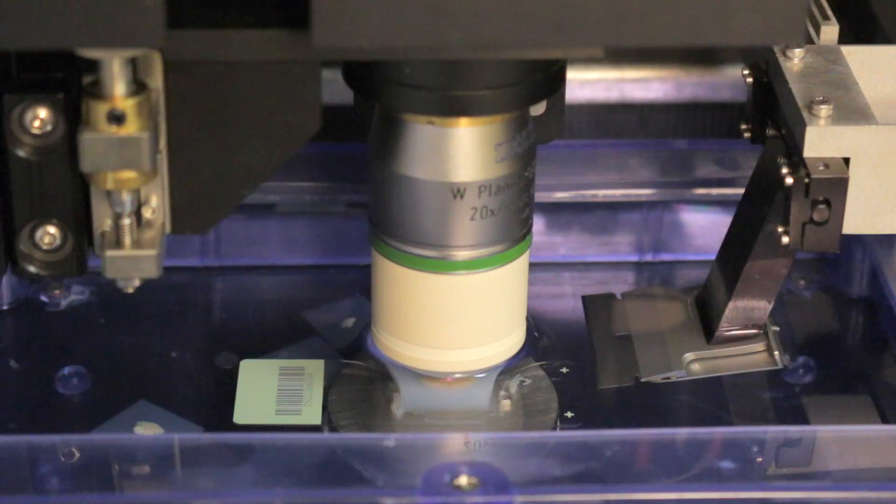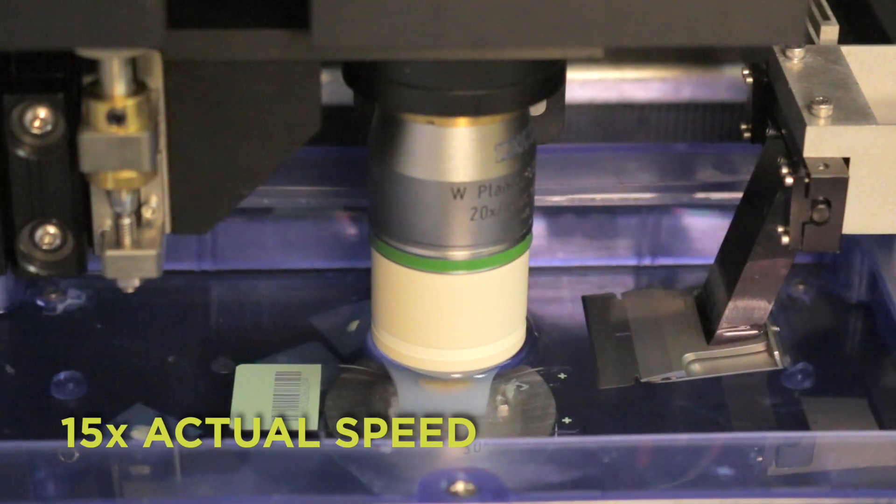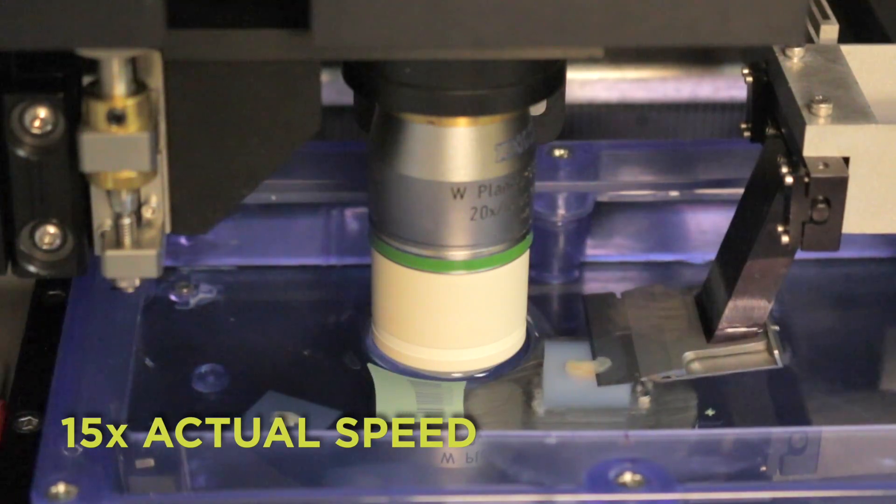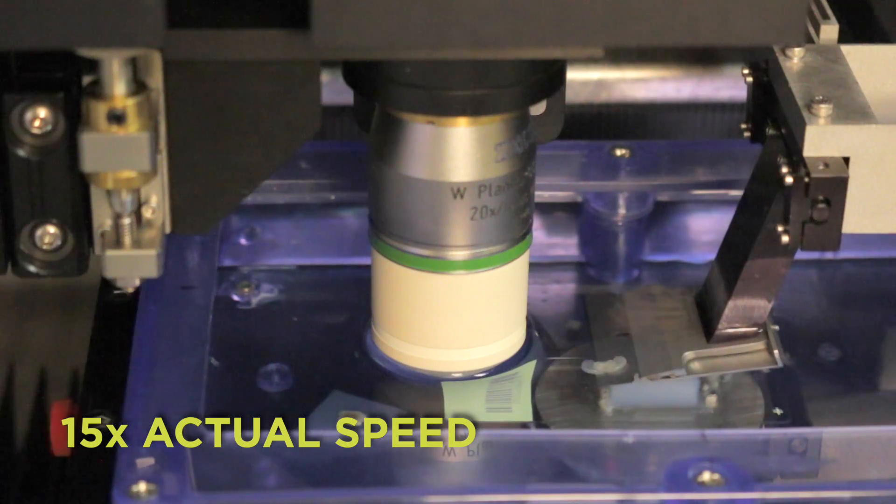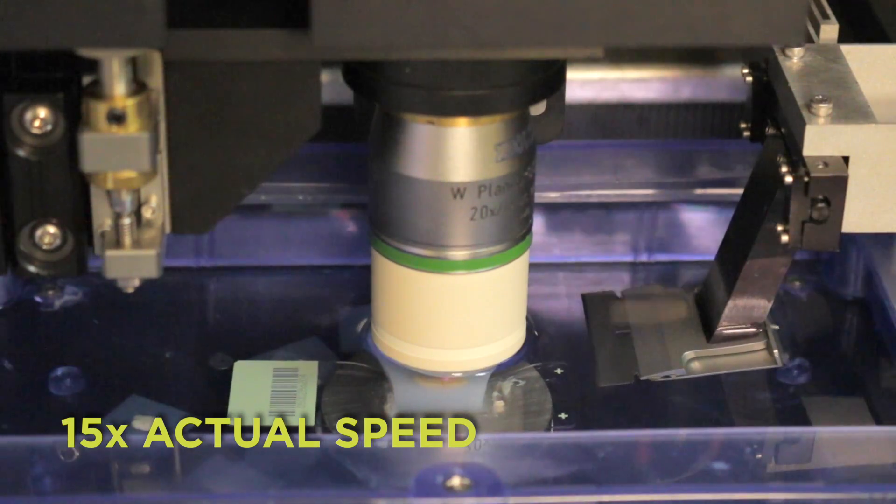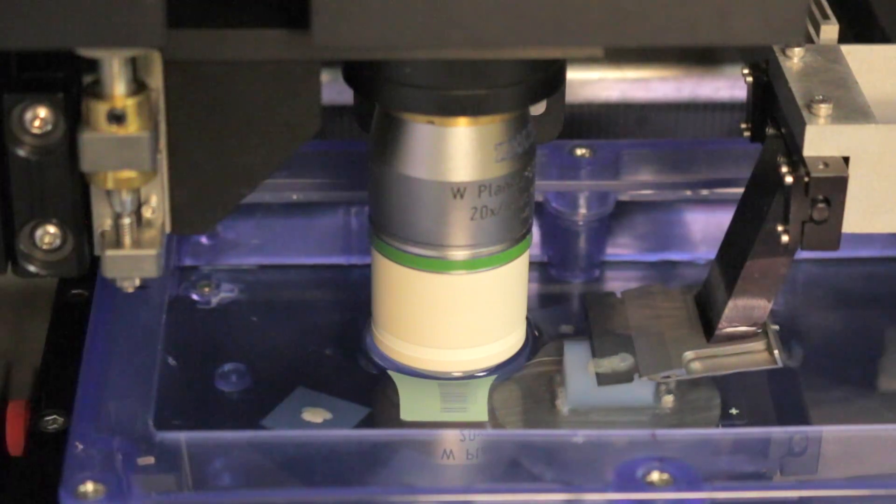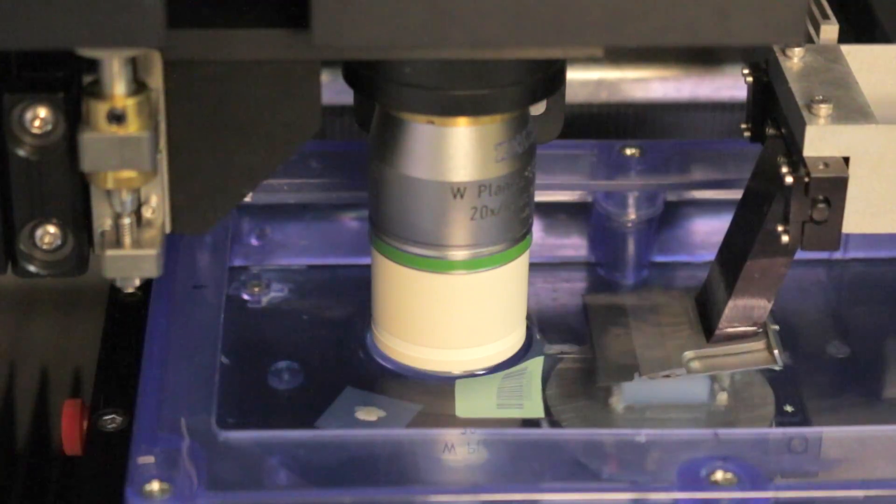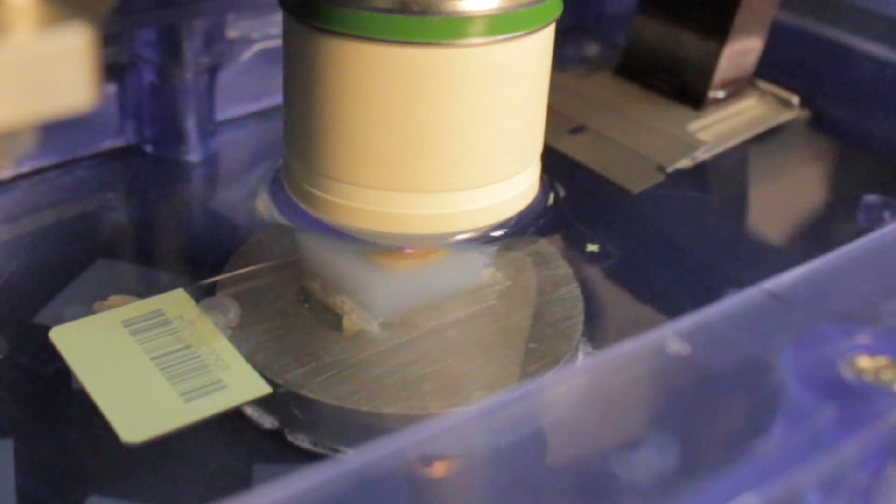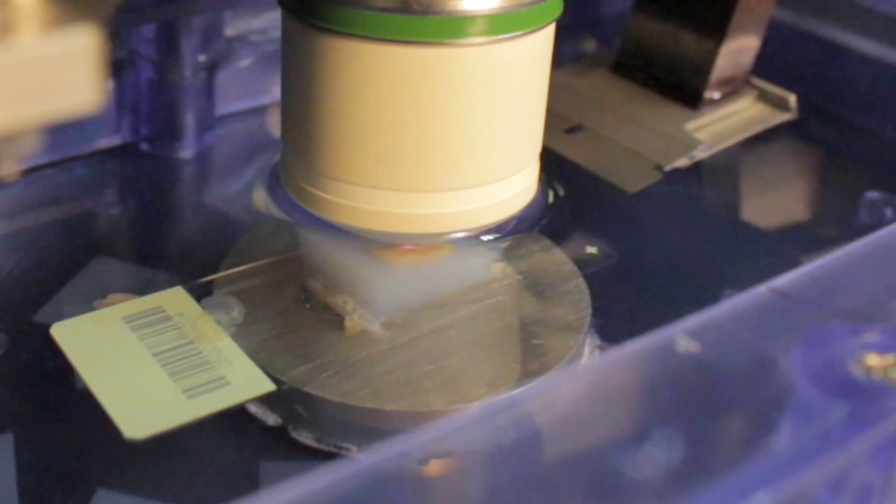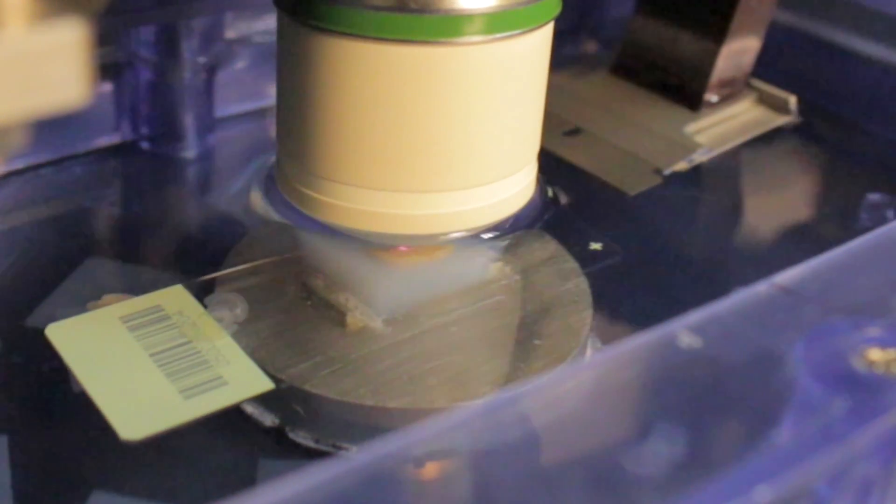The vibratome comes in and sections the mounted brain at 100 microns. The laser then images the brain. The tissue-side system enables us to collect 715 gigabytes of data from sectioning one whole brain in 18.5 hours. So we section the whole brain relatively fast.